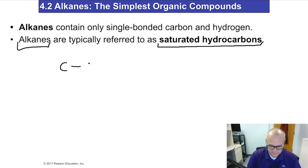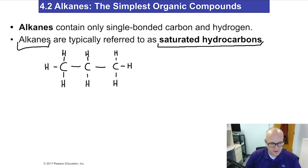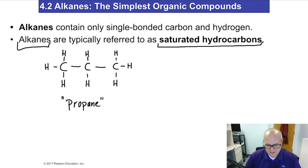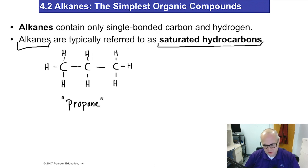So let's just draw a simple alkane. You should recognize this is a Lewis structure, or an expanded structural formula. That's an example of an alkane — this is actually propane. It's a saturated hydrocarbon. Saturated hydrocarbons contain carbon-carbon single bonds only, and they only contain carbon and hydrogen, so there's no sulfur or oxygen or anything like that in this molecule. They're called alkanes — they're the simplest ones.